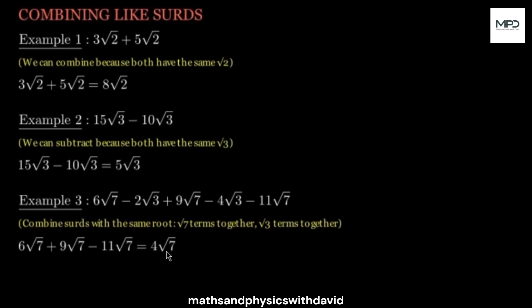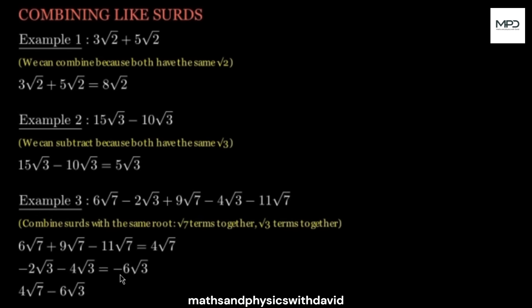Now we're going to combine the ones with square root of 3. In this case, minus 2 minus 4 is going to give you minus 6, and you pick one square root of 3. So at the end of the day, you bring your 4 root 7 and minus 6 root 3 together. Your answer is 4 root 7 minus 6 root 3.